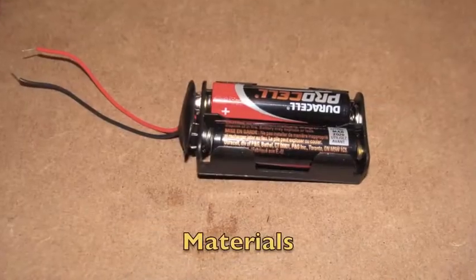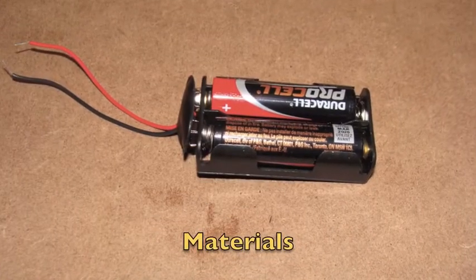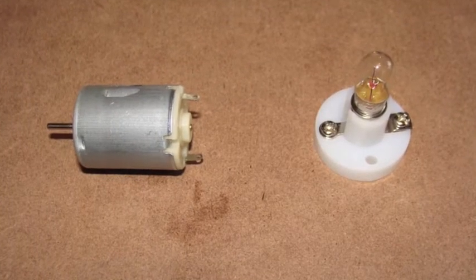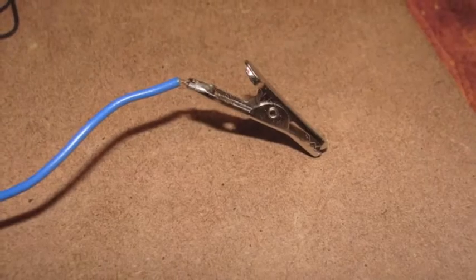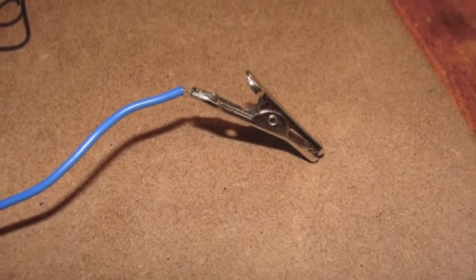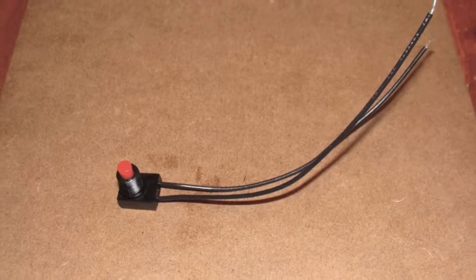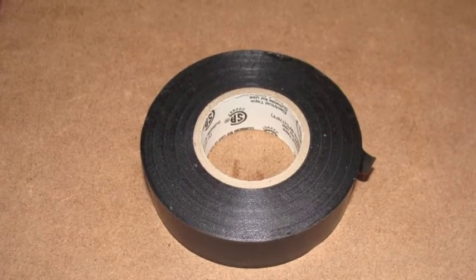The materials we'll be using to make our circuits include batteries, a motor or light bulb, wires and alligator clips, switches to turn the circuits on and off, and electrical tape.